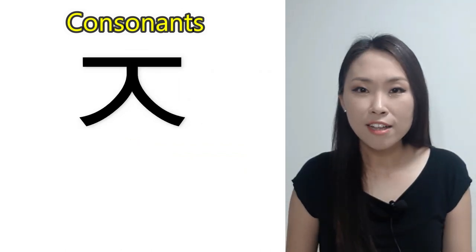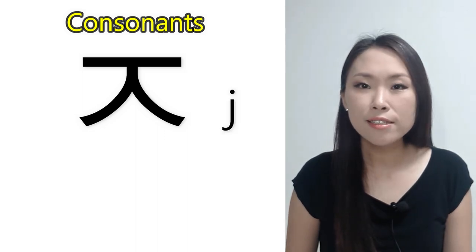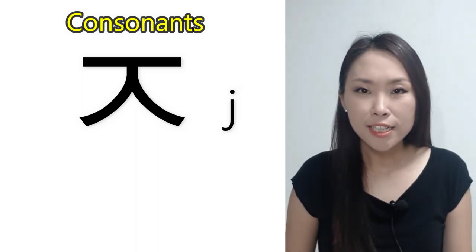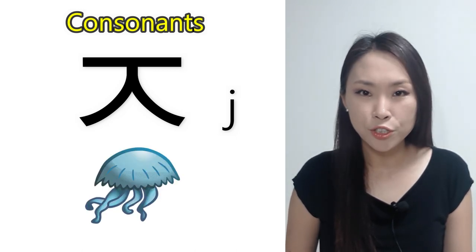The name of this consonant is 지읒. The romanized letter for 지읒 is J. 지읒 sounds like the letter J in the word jellyfish. 즈, 즈, 즈.